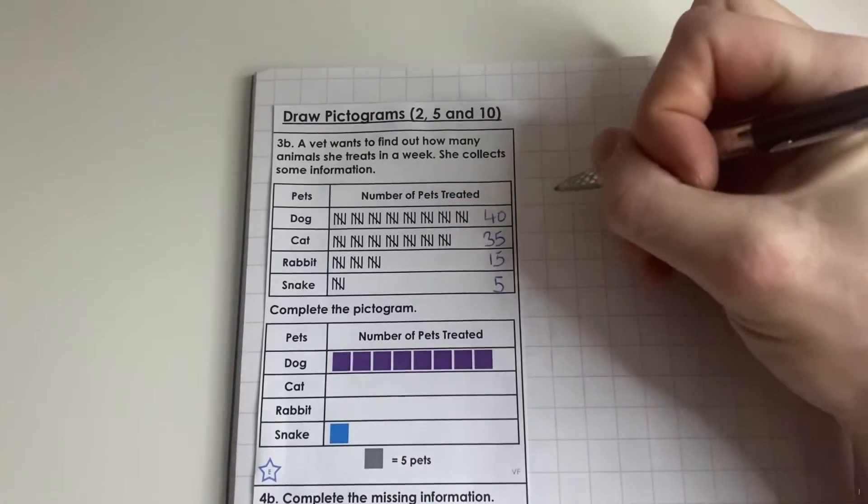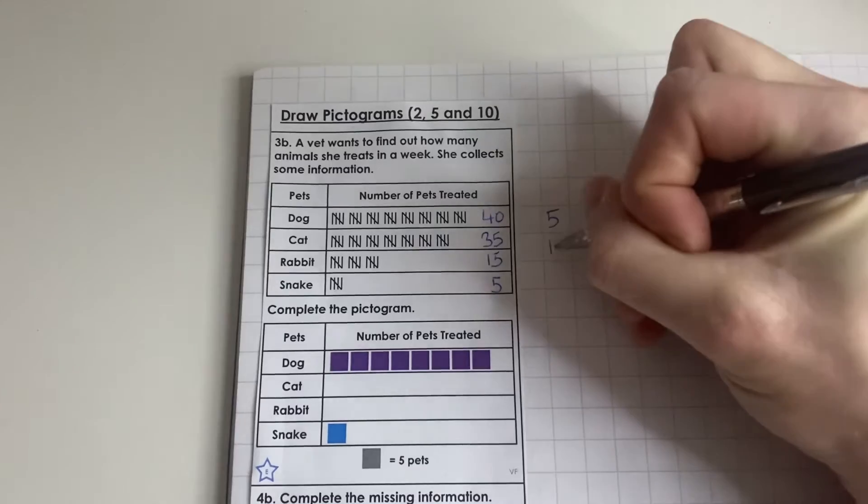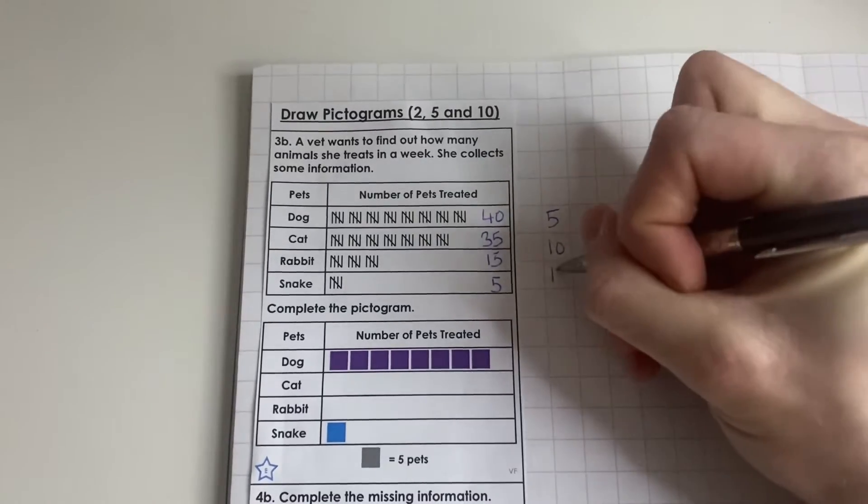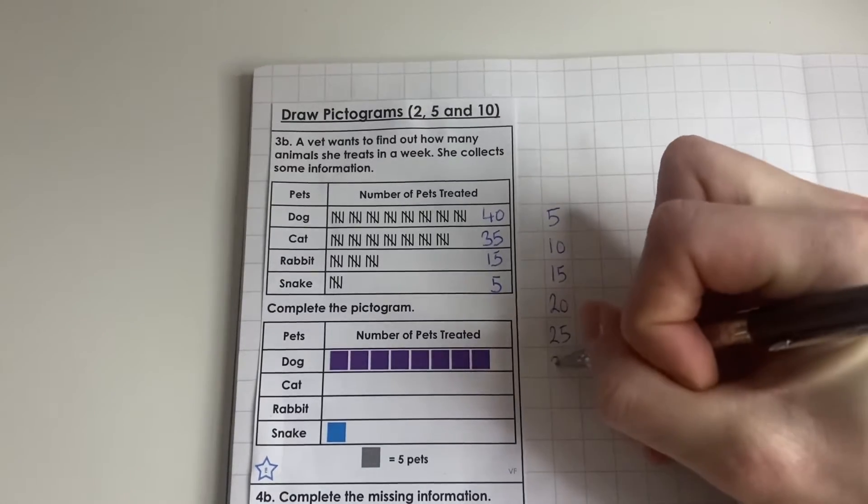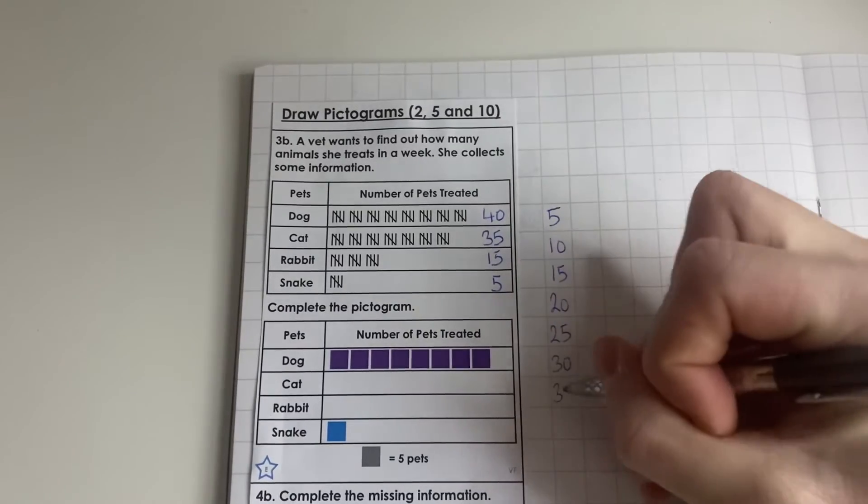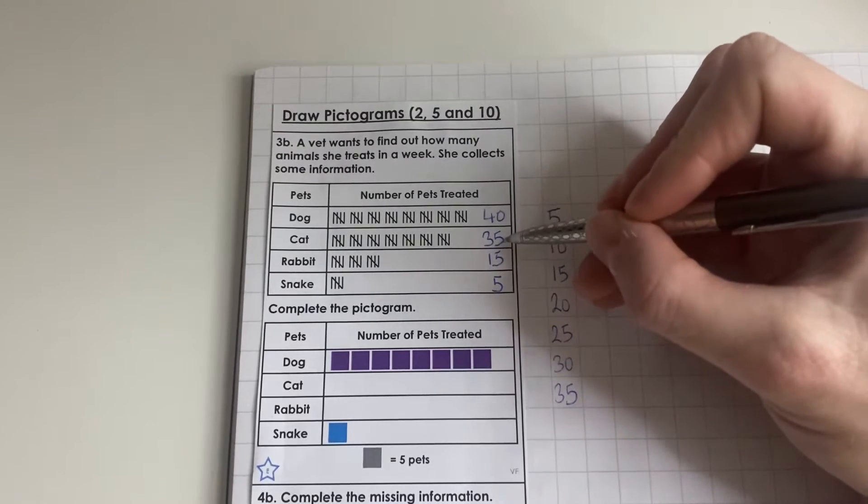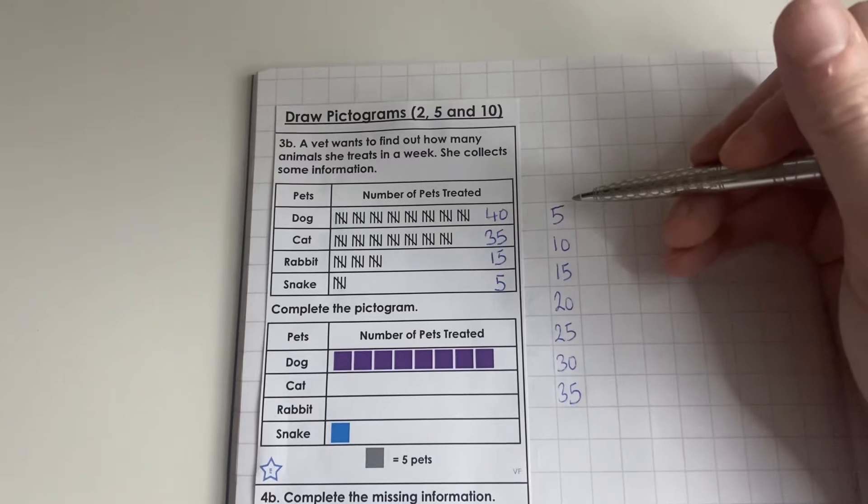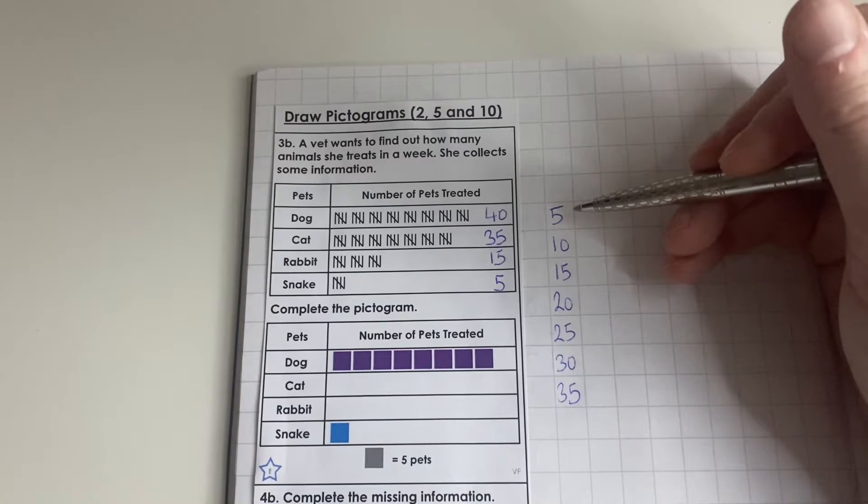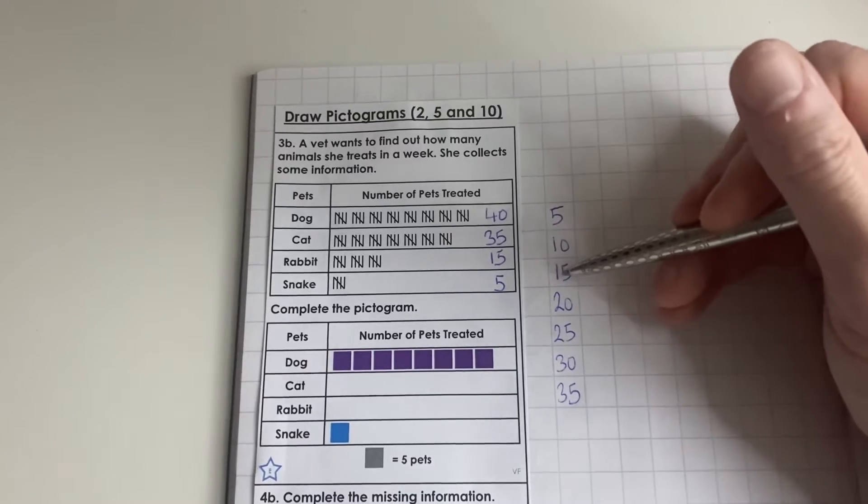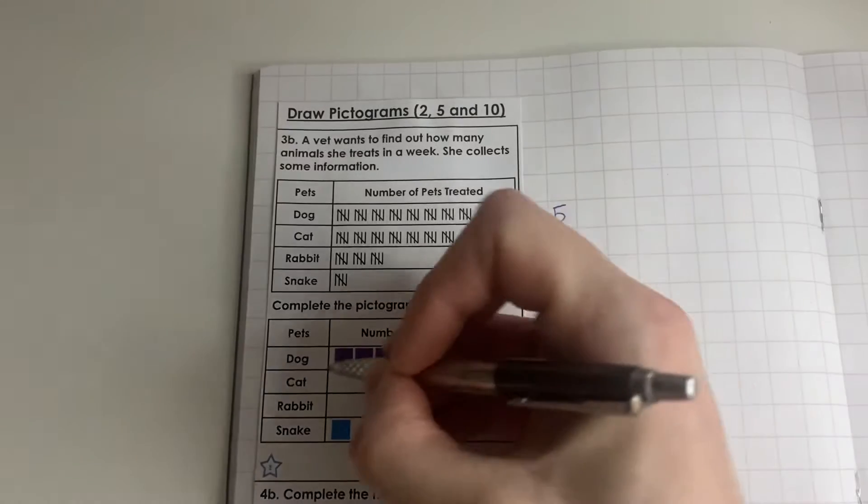Before we start, I'm going to do the five times table: 5, 10, 15, 20, 25, 30, 35. I'm going to stop there because that's the number of cats that have been treated. So we count how many that is: 1, 2, 3, 4, 5, 6, 7. So I need to draw 7 boxes.